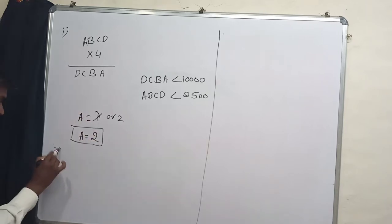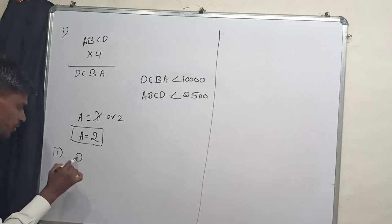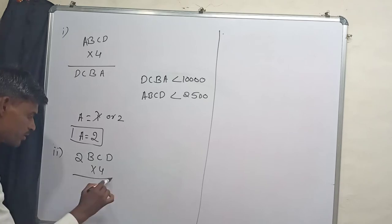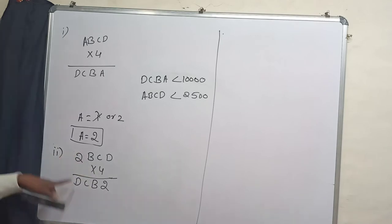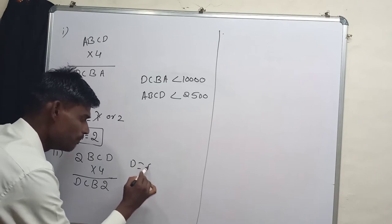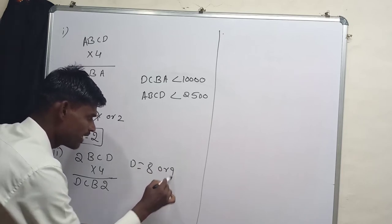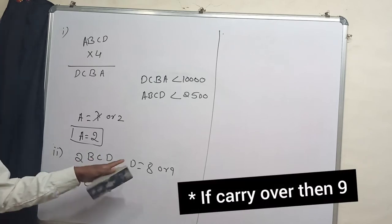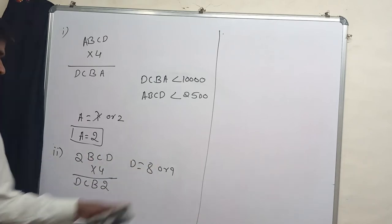Now I am going to put A equals 2 in this one: 2BCD into 4 is equals DCB2. Now look at here, 4 times 2 is 8. Of course we get the value of D may be 8 or 9. It can't be 10 because it becomes a 5 digit, there is a carryover and it becomes a 5 digit number. Now look at it, D is equals 8 or 9.